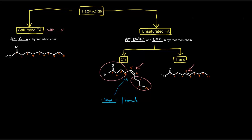Now you might be thinking — why is this called saturated? Why is this called unsaturated? Well, what they're saying is that saturated fatty acids are saturated with hydrogens — these carbons have as many hydrogens as they can possibly have. As soon as you put a double bond somewhere, there are fewer hydrogens. For instance, at carbons 5 and 6 in the saturated case there are two hydrogens on each carbon, whereas in both unsaturated cases, those carbons only have one hydrogen each. So they are not saturated with hydrogens.